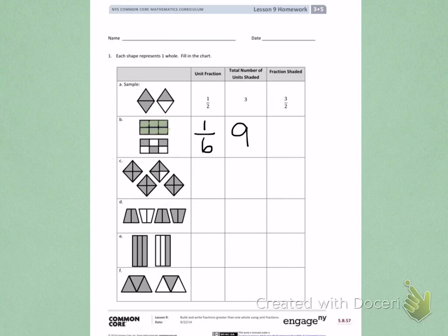9 total shaded parts. When I write the fraction, 9 is the shaded amount. Each of the wholes are divided into sixths, so this is 9 sixths shaded.